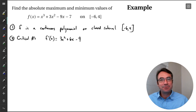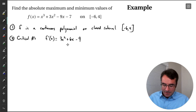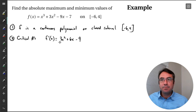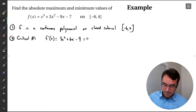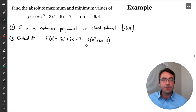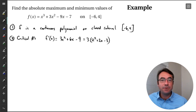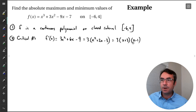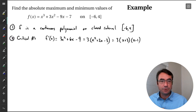Now we want to get into the habit of simplifying if possible, and we can do that here through factoring. We factor out a 3, giving us 3 times (x squared plus 2x minus 3). With a leading coefficient of 1, this is easier to factor further, and we get 3 times (x plus 3) times (x minus 1). This is our simplified derivative.